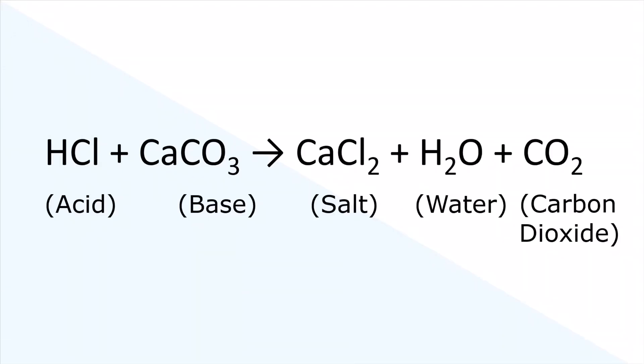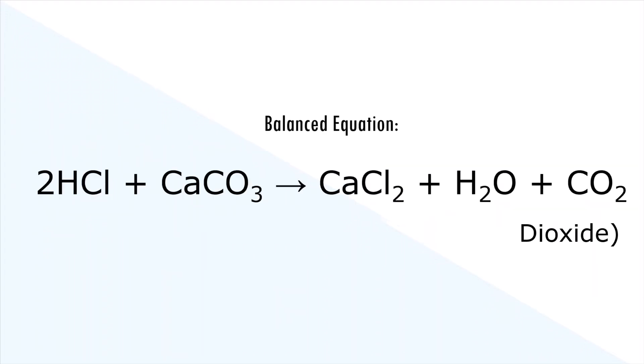Here's the equation from this reaction. When hydrochloric acid reacts with calcium carbonate, the base, three products are formed. Calcium chloride is the salt formed, along with water and carbon dioxide formed as the byproducts. The balanced equation is presented like this.